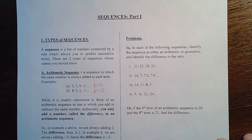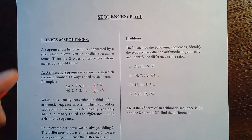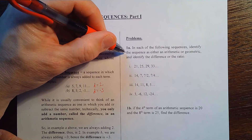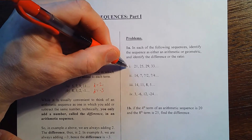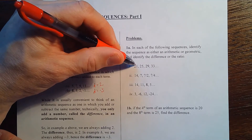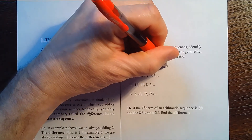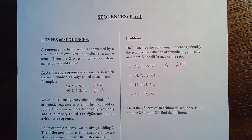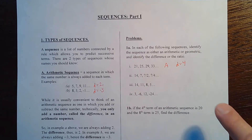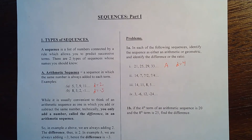Let's look at the first problem, 1a. In each of the following sequences, identify the sequence as either arithmetic or geometric, and identify the difference if it's arithmetic or the ratio if it's geometric. In part i, we're adding 4, so we put A for arithmetic and d equals 4. Now pause the video and do parts ii, iii, and iv — stop and resume when you're done.